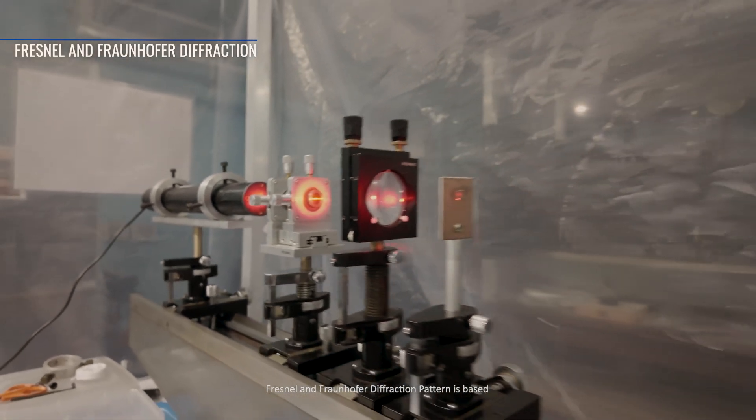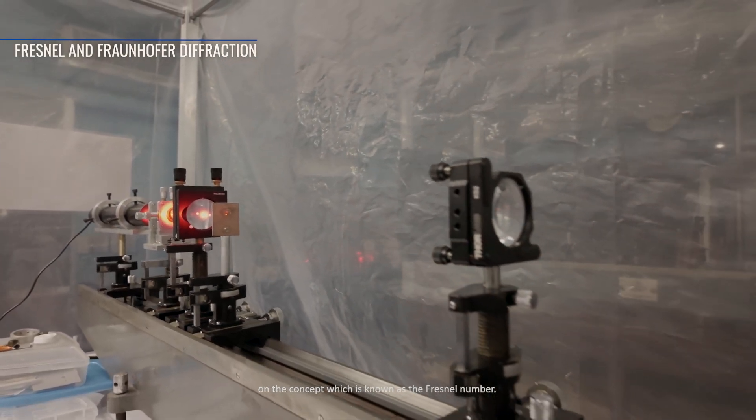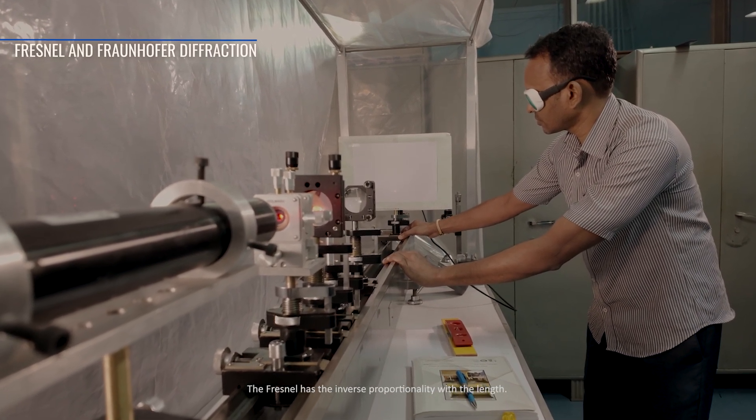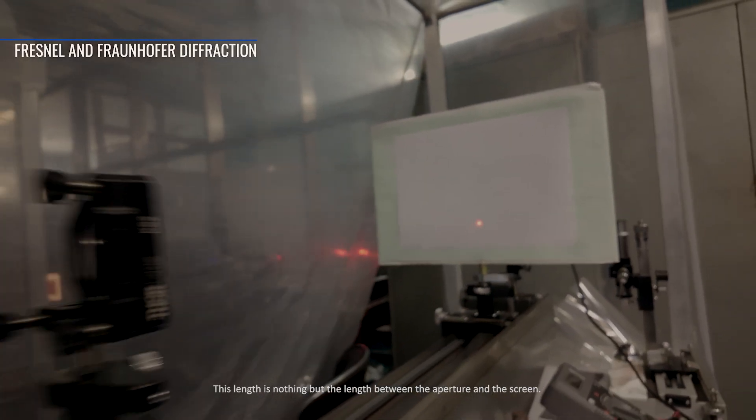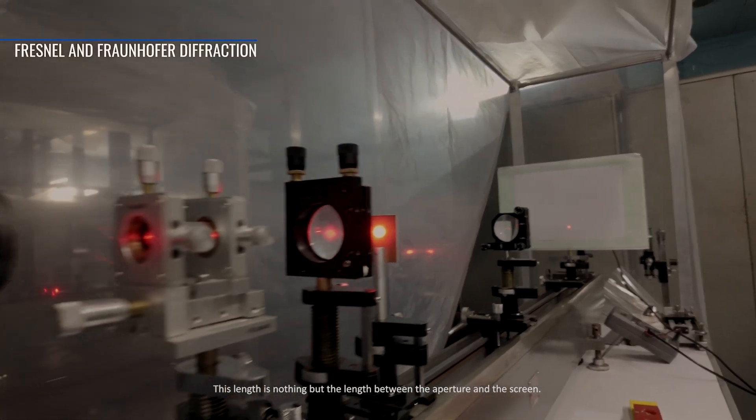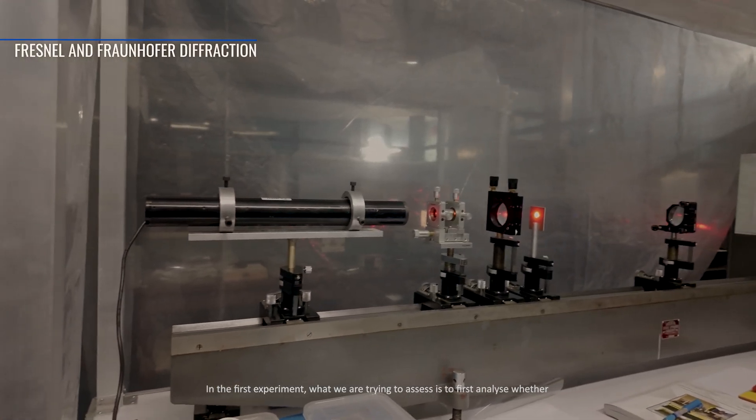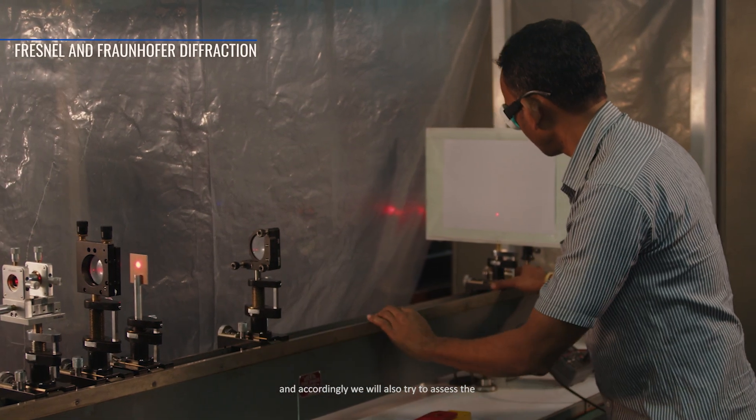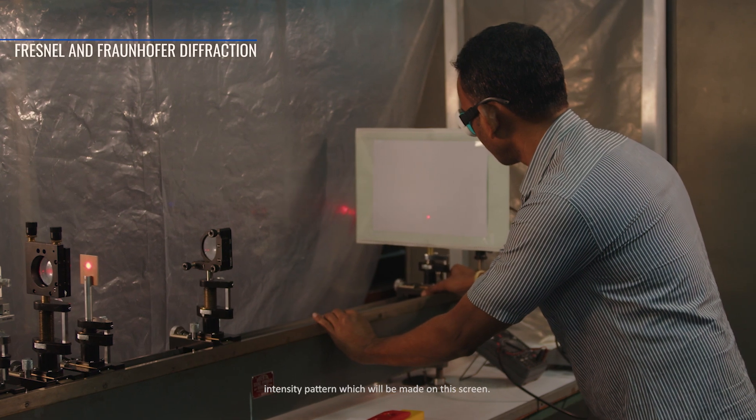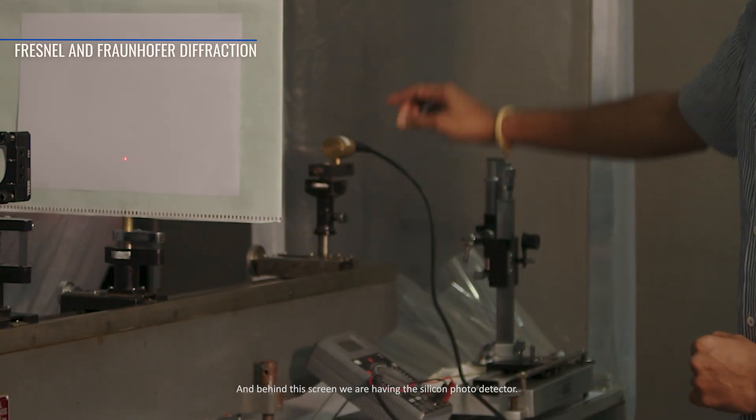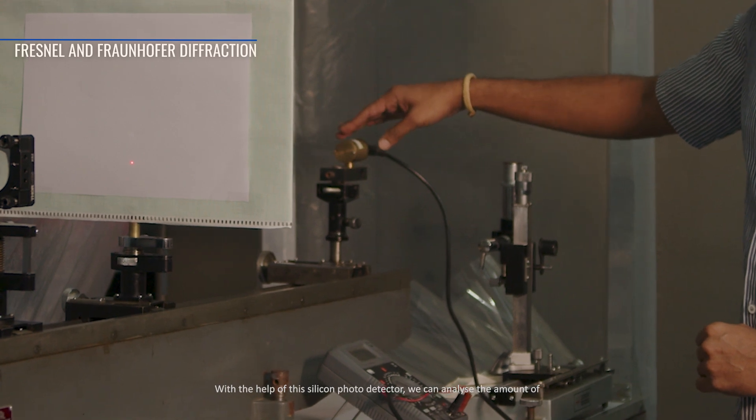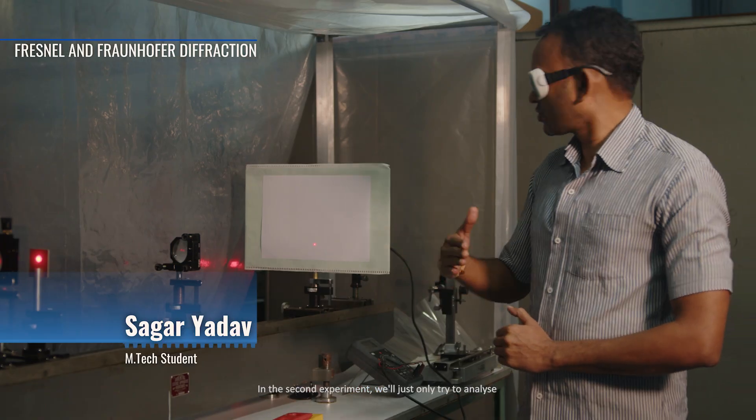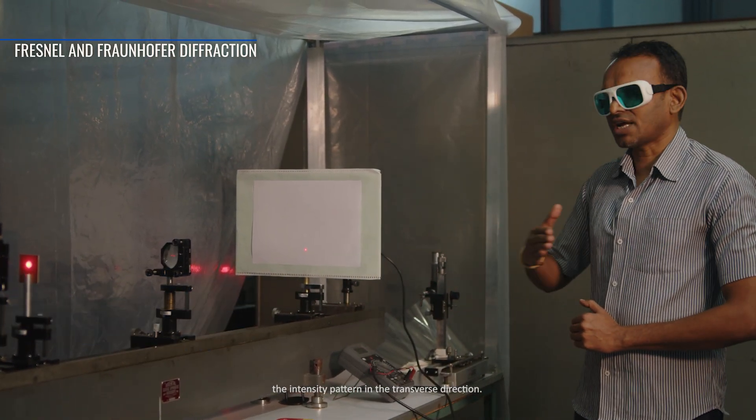Fresnel and Fraunhofer diffraction patterns are based on the concept known as the Fresnel number. The Fresnel number decides whether we are in the Fresnel region or in the diffraction region. The Fresnel number has inverse proportionality with the length between the aperture and the screen. In the first experiment we're trying to assess whether we are in the Fresnel or Fraunhofer region and accordingly analyze the intensity pattern on this screen. Behind the screen we have a silicon photodetector. With this silicon photodetector we can analyze the amount of intensity with the help of this multimeter. In the second experiment we'll analyze the intensity pattern in the transverse direction.